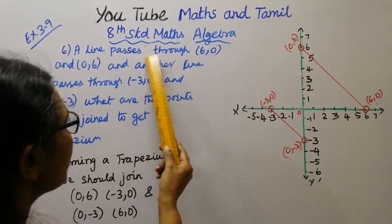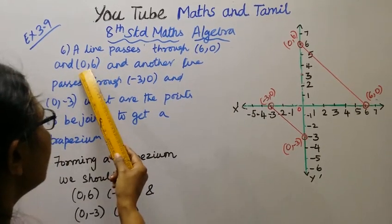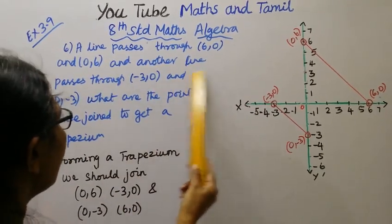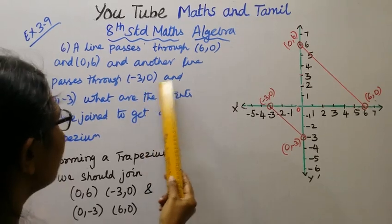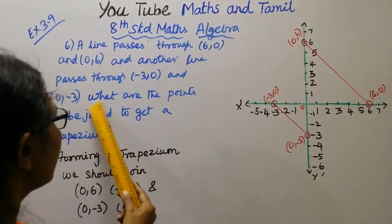A line passes through 6,0 and 0,6. Another line passes through minus 3,0 and 0, minus 3.